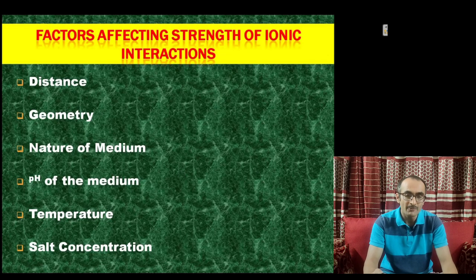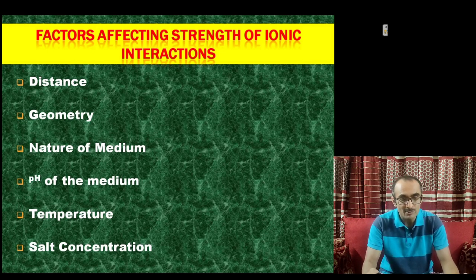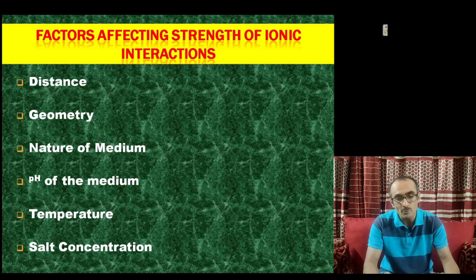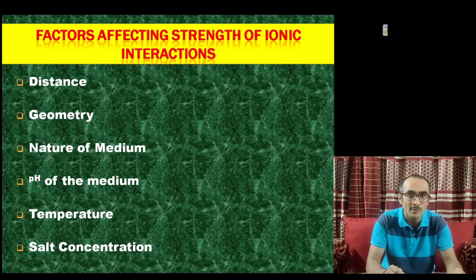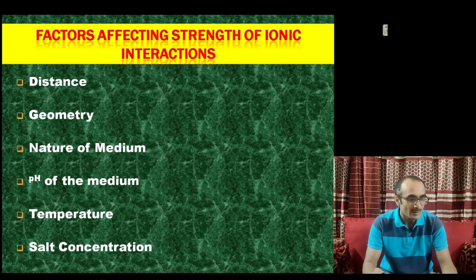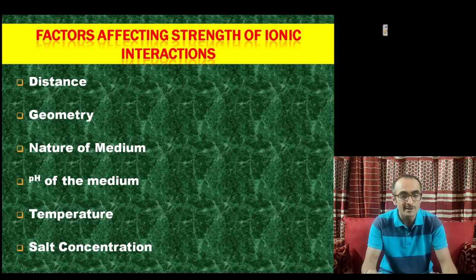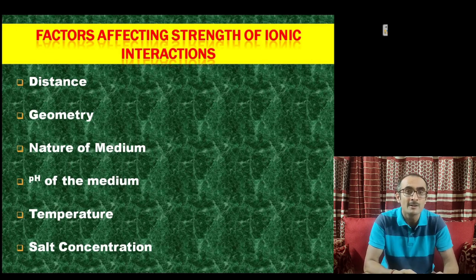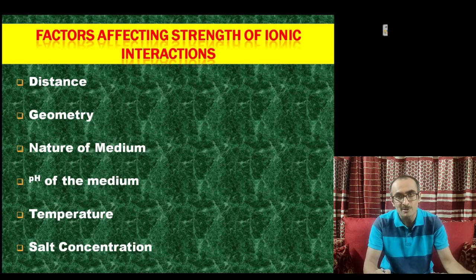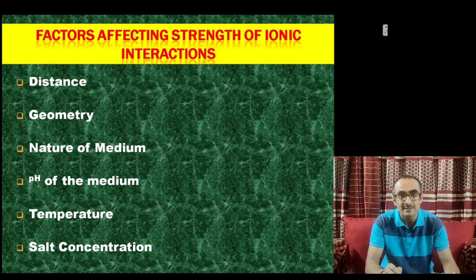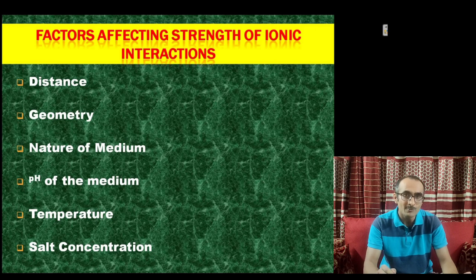There are many factors which can affect the strength of ionic interactions. First is distance — because of Coulomb's force, if the ions are kept at an optimal distance only then will there be attractive force, otherwise it will disappear. Second is geometry — the angle at which two ions come together. Generally in proteins, ionic interactions forming at a 150 to 180 degree angle are more stabilizing compared to lesser bond angles. Third is the nature of the medium — whether it is in a non-polar or polar medium. For example, an ionic interaction present in the hydrophobic core of a protein will have more strength than one on the surface, because the dielectric constant in the non-polar core is less.